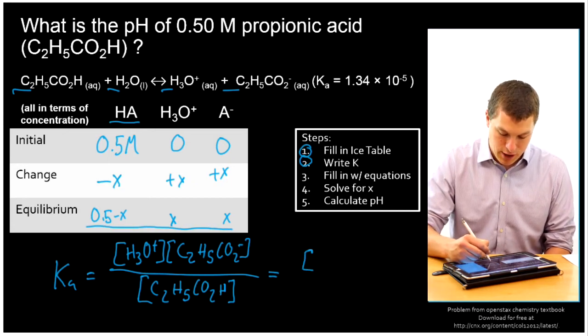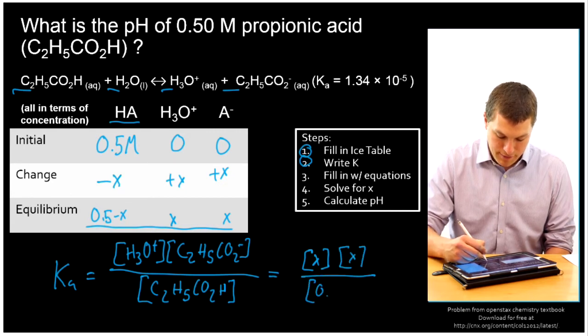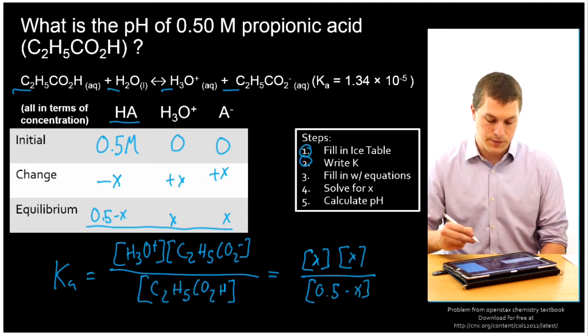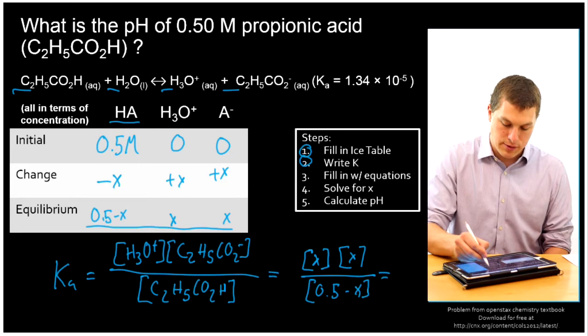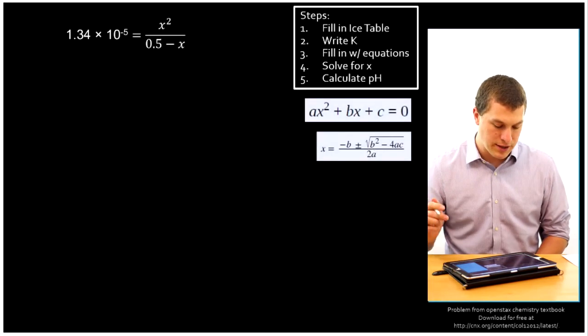So at equilibrium, we're going to get X for our hydronium concentration, we're going to get X for our A- concentration, and we're going to get 0.5 minus X for our propionic acid concentration. And that's all equal to our K-A, which is this guy. So let's go to the next slide where I'll have that written out and we can start working on the algebra.